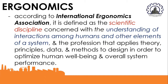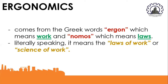When we see 'scientific discipline,' it means that ergonomics is a branch of scientific knowledge. 'Concerned with the understanding of interactions among humans and other elements of a system' means it looks at how humans interact with the tools and equipment they use while performing tasks. Ergonomics comes from the Greek words ergon, which means work, and nomos, which means laws. So literally speaking, ergonomics means the laws of work or the science of work.